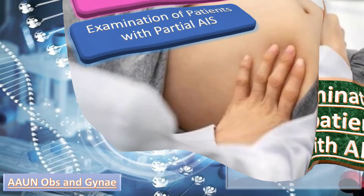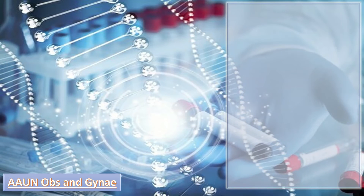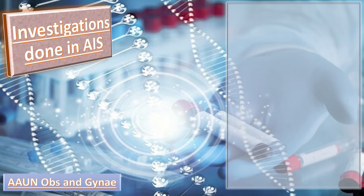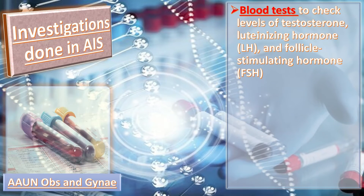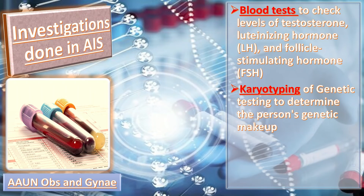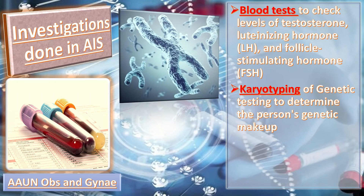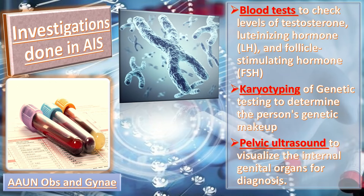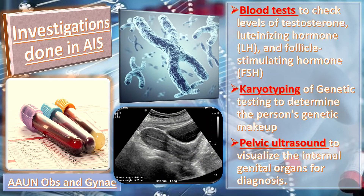Investigations in patients with AIS include blood tests to check levels of testosterone, LH, and FSH. Genetic typing or karyotyping is done to determine the person's genetic makeup, and pelvic ultrasound is very important to assess the internal genitalia.